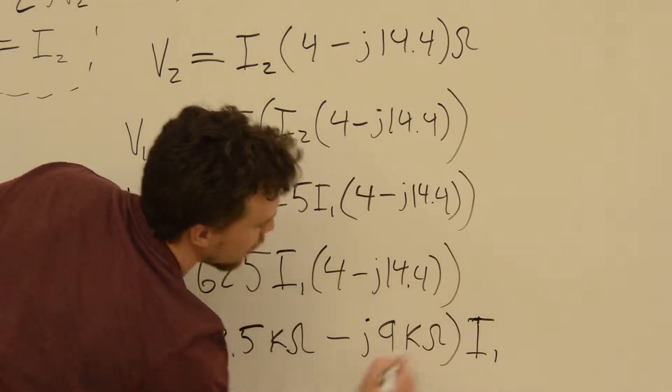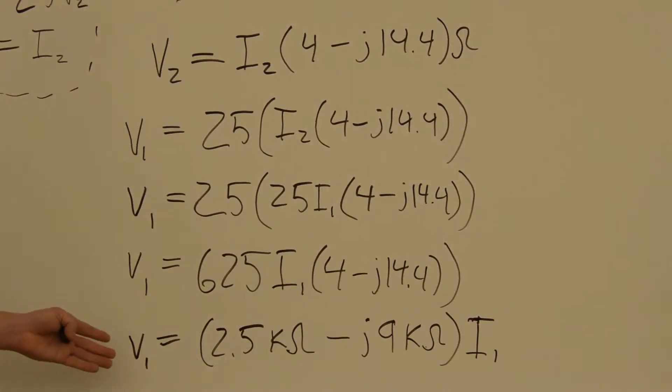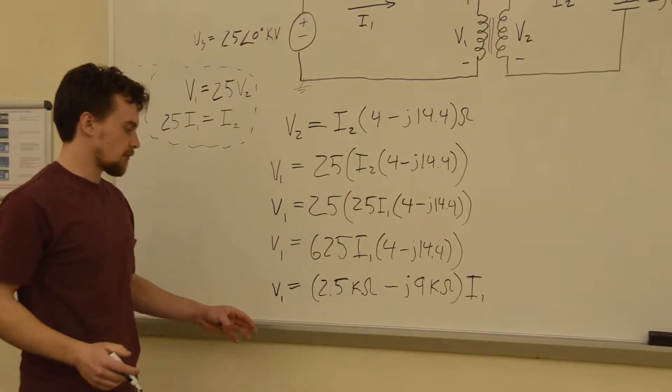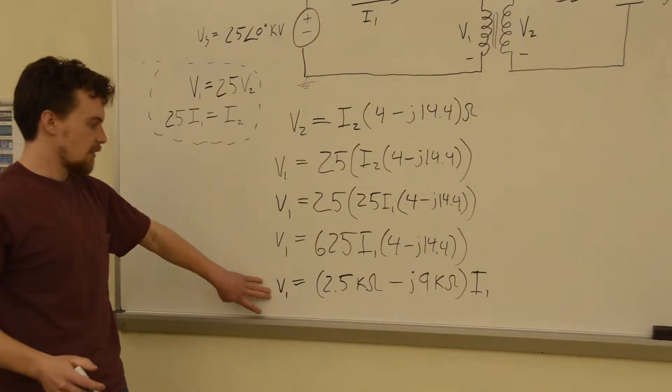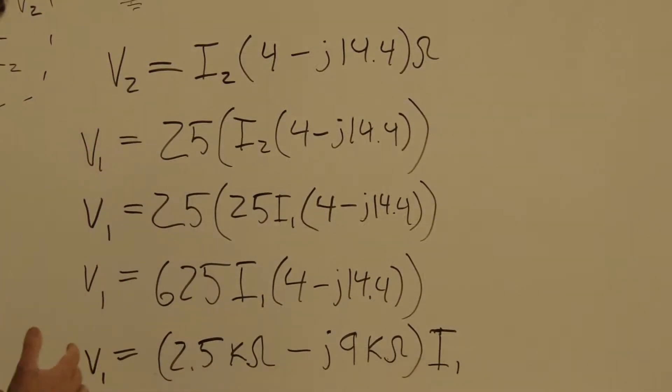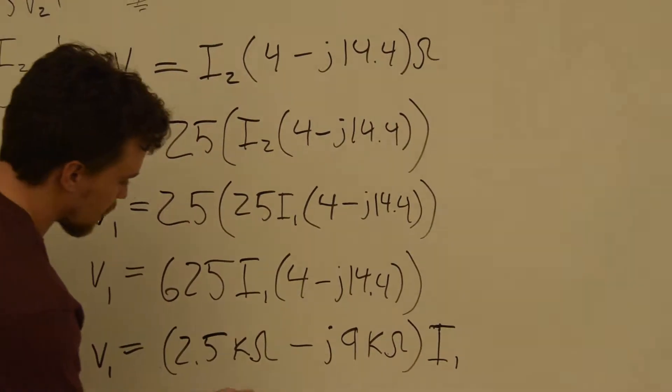Okay, so now we have, we have V1 is equal to some impedance times I1. So this is kind of saying that V is equal to R times I, which is Ohm's law. Now, this is a useful equation right here.